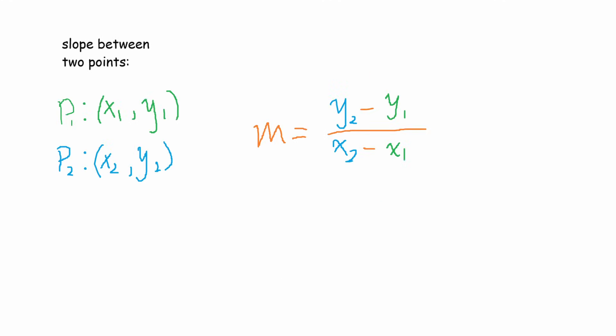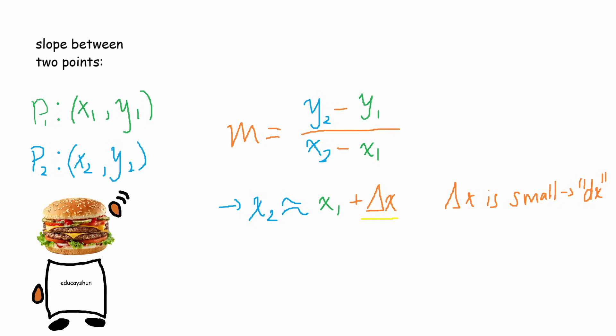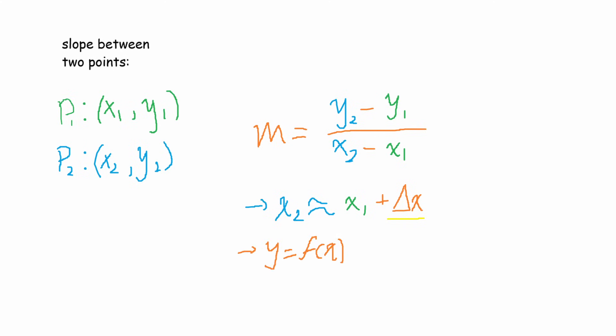Let's combine the ideas of zooming in and finding a function. We start with our same slope equation. As we zoom in, x2 is x1 plus a really small amount based on how much we zoomed in. We're going to call that delta x. What about for y?